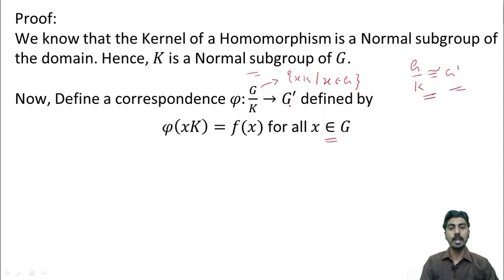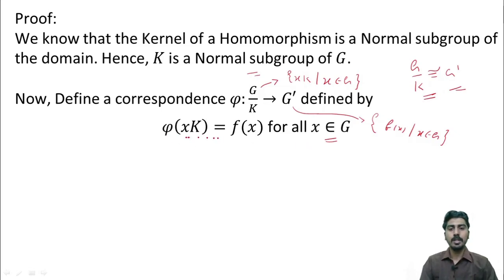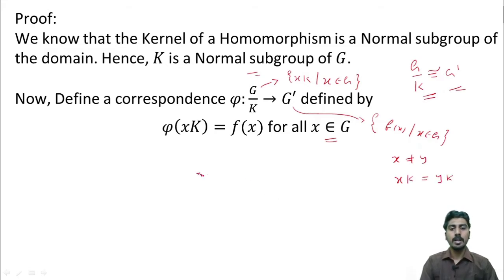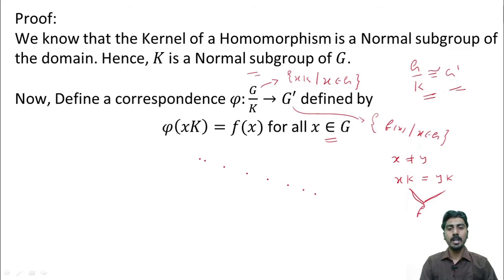Since f from G to G dash is an onto function, the elements of G dash are of the form f of x where x belongs to G. So, this rule maps the elements of G by K into the elements of G dash. Here we have a confusion. In case of cosets, it may happen x not equal to y but xK can be equal to yK. Phi will be a function if and only if every element of G by K has a unique image in G dash. That is, if xK is equal to yK then phi of xK should have the same image as that of phi of yK. But here phi of xK maps to f of x, phi of yK maps to f of y. We don't know whether f of x is equal to f of y or not.